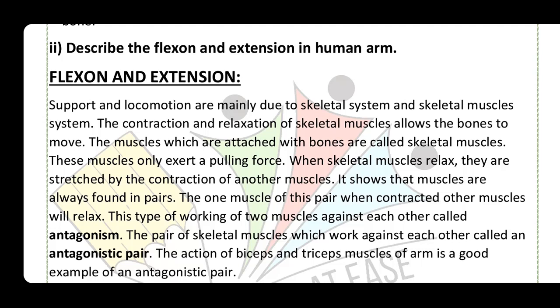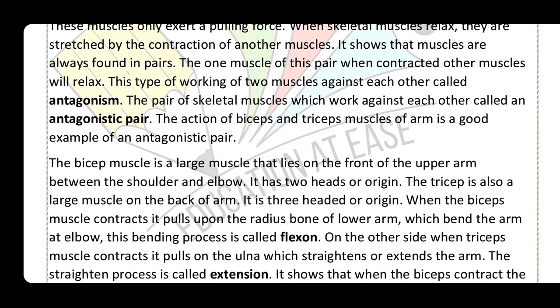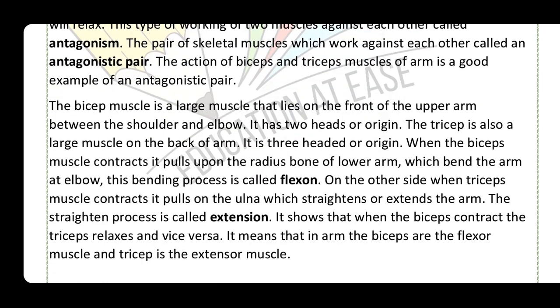Muscles are always found in pairs. When one muscle of a pair contracts, the other relaxes — these are called antagonistic pairs. The action of biceps and triceps muscles of the arm is a good example of an antagonistic pair.